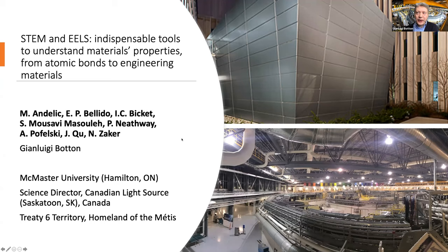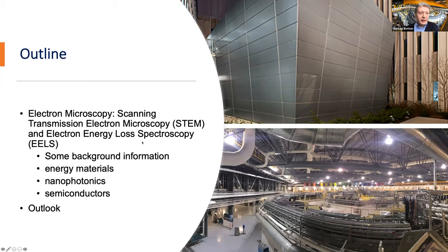Let me start with a brief outline. I'll give a brief tutorial on electron energy loss spectroscopy and STEM to give background to everybody, then move on to examples of application of energy loss spectroscopy in energy materials and nanophotonics, and also some application of STEM in semiconductors, and provide an outlook. In this series, you've heard beautiful talks on the application of electron microscopy in different types of materials, and I want to put today's discussion in that context.